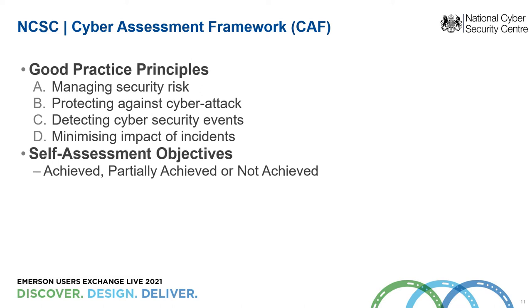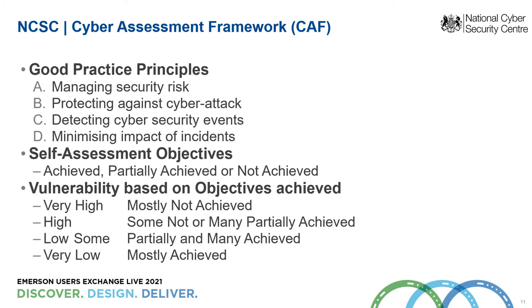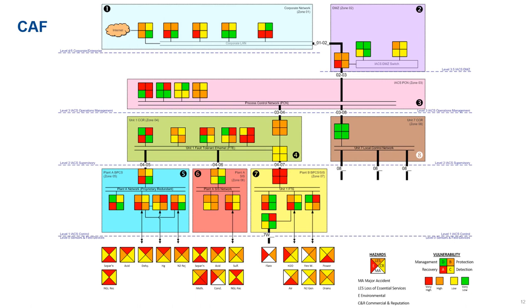The CAF, the Cyber Assessment Framework, allows you to self-assess a number of objectives. Depending on how many of these objectives have been achieved or not achieved gives you a vulnerability. Applying that vulnerability to your digital assets, you can see these four elements: management, protection, recovery, detection. Red is very high vulnerability, so not many objectives have been achieved. Green is very low vulnerability. You've got this immediate sense of where you've got most green, you're in control of your digital assets. Where you've got red, you're more concerned about your vulnerability.